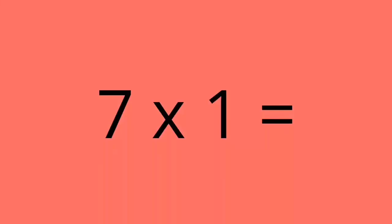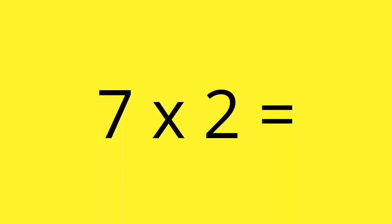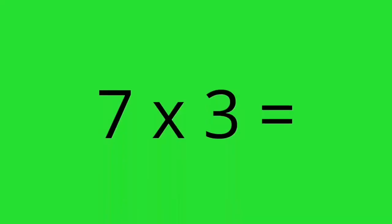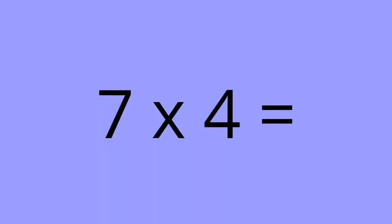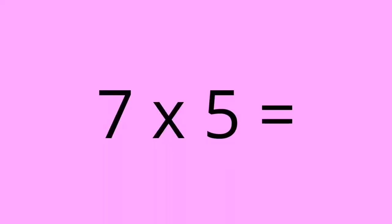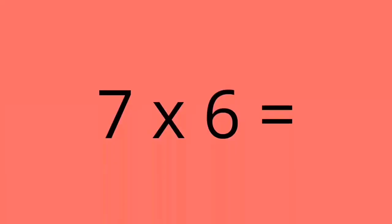7 times 1 equals 7. 7 times 2 equals 14. 7 times 3 equals 21. 7 times 4 equals 28. 7 times 5 equals 35.